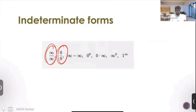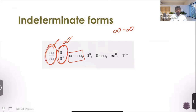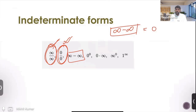We'll do a quick revision of the indeterminate forms. Infinity minus infinity is also an indeterminate form. We all know that these two are indeterminate forms — everyone knows. What about infinity minus infinity? We're tempted to say, why isn't this zero?